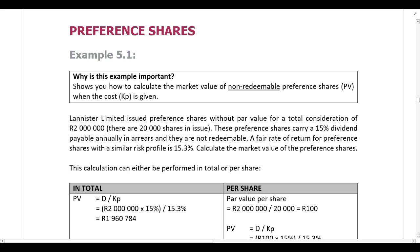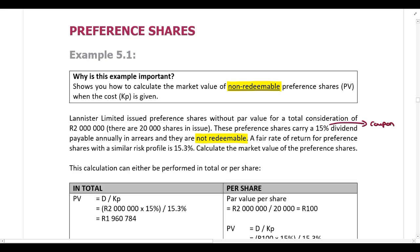Example: Lannister Limited issued preference shares with no par value for a total consideration of 2 million Rand, and there are 20,000 shares in issue. These preference shares carry a 15% dividend, payable annually in arrears, and they are not redeemable. We are dealing with a non-redeemable preference share, and they carry a 15% dividend — that is your coupon rate used to calculate the dividend cash flow, not the cost of the preference shares.